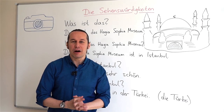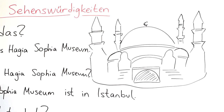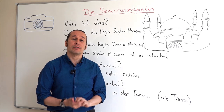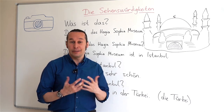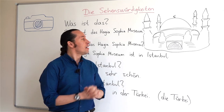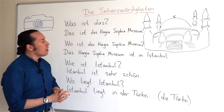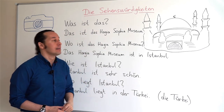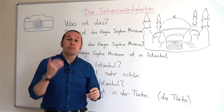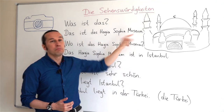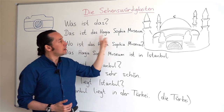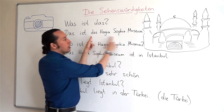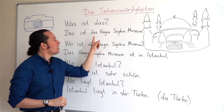Let's continue with another landmark. I tried to draw the Hagia Sophia Museum. The Hagia Sophia Museum is located in Istanbul, in Sultanahmet, in Turkey — it's a really beautiful place and I strongly advise you to visit it. In German, when referring to a museum, we use the article 'das' — das Museum. So the full name is das Hagia Sophia Museum.